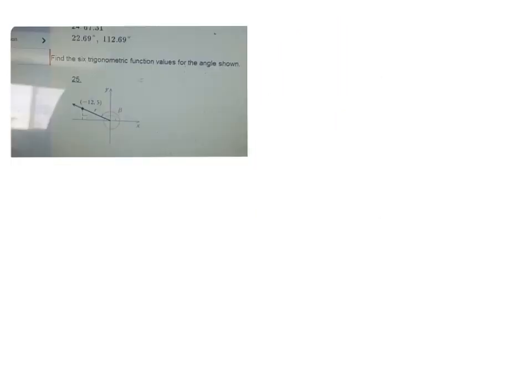All right, another question, I guess sort of related to that, is find the six trig functions for the angle shown. So here I've got an angle, and they have it going around twice, but it doesn't matter. You can just go around once.